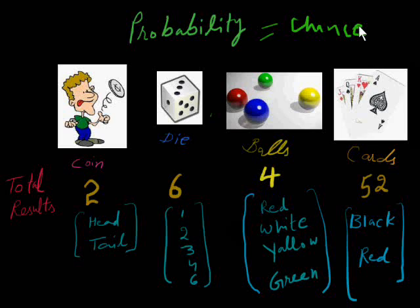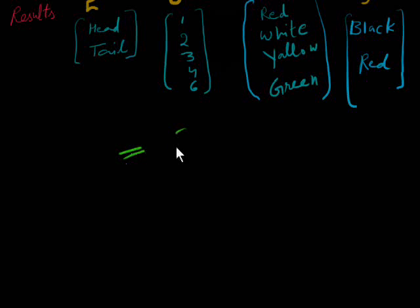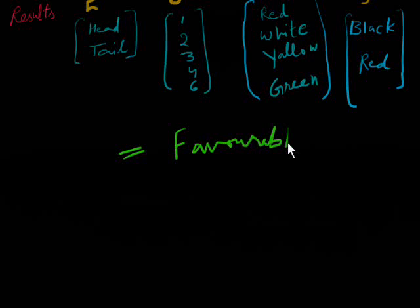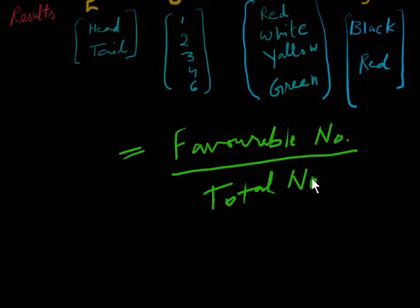All these chances are based on numerical data. So probability is the favorable number of outcomes, events, cases, or results, divided by the total number of events, cases, or results.